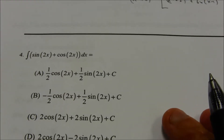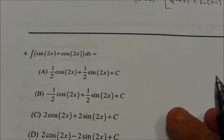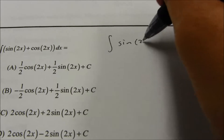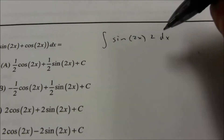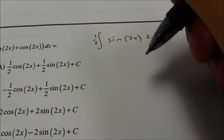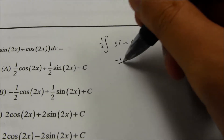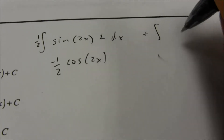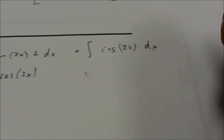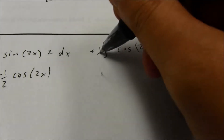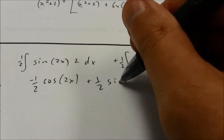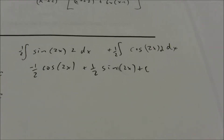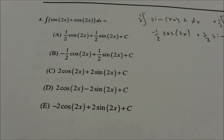Number 4 is an integral of a sum, so I can break it into two parts. The antiderivative of sine is negative cosine — but it's sine of 2x, so the derivative of the inside function is 2. We multiply one in and balance it with 1/2: negative 1/2 cosine of 2x. For the second part, the antiderivative of cosine of 2x: balance the factor of 2 with 1/2, giving 1/2 sine of 2x, plus C. That is option B.